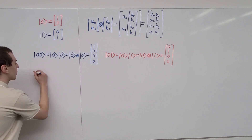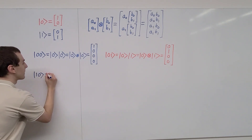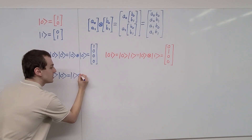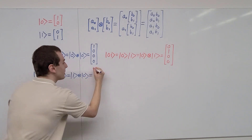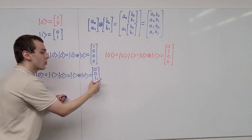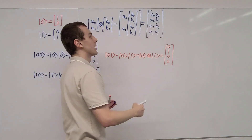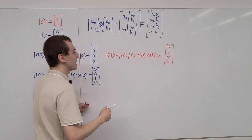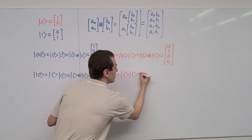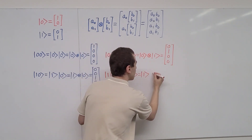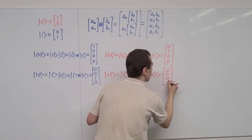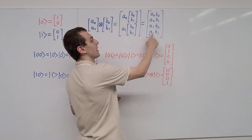The next two combinations are |10⟩ and |11⟩. The |10⟩ state, written explicitly as |1⟩ tensor product |0⟩, gives a column vector with entries 0, 0, 1, 0 — the third entry, the 10 position, is non-zero. Finally, the |11⟩ state is |1⟩ tensor product |1⟩, giving a column vector with entries 0, 0, 0, 1 — so the last entry, the 11 position, is non-zero.